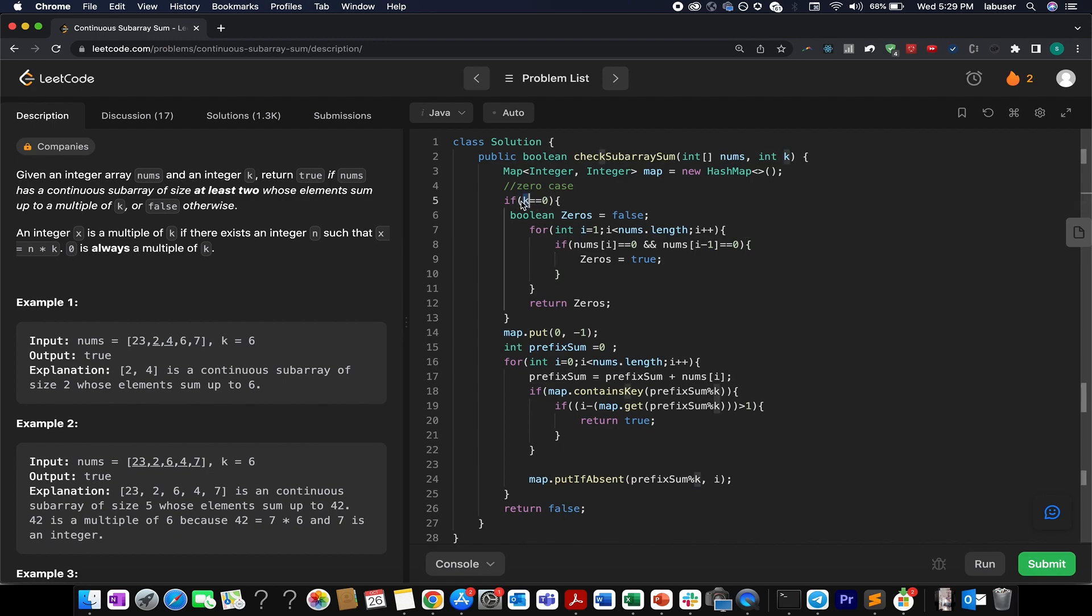The next corner case that we have is when k value is 0, what do we check? We check whether we are able to identify two consecutive zeros in this entire array. If we are able to do that then we return true in those cases.